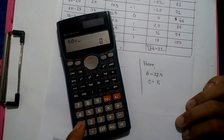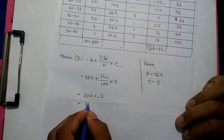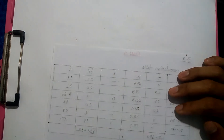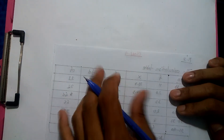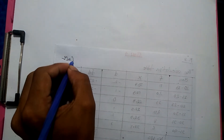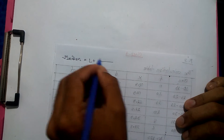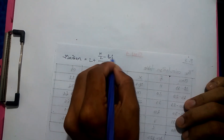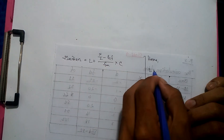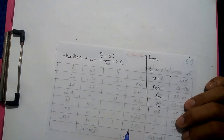So looking at the calculation: 2.5 plus 0.6 equals 23.1. So this is the mean. Now for the median — the median formula is: L plus n by 2 minus previous cumulative frequency, divided by FM, into c. Here, PCF is the previous cumulative frequency, FM is the frequency of the median class, and c is the class width.